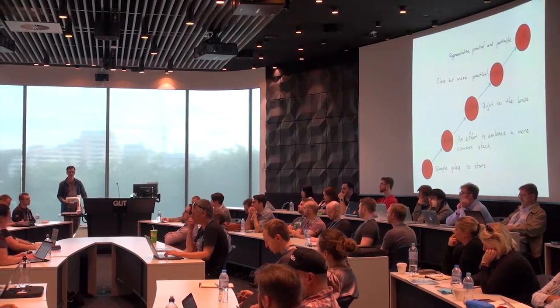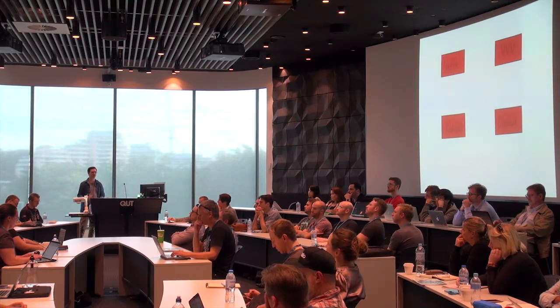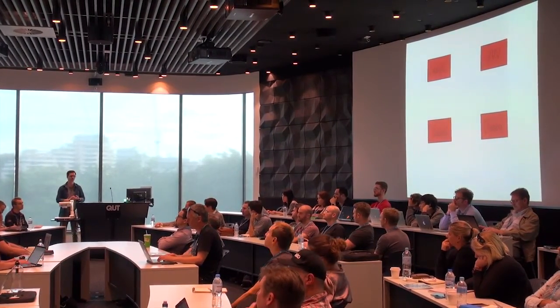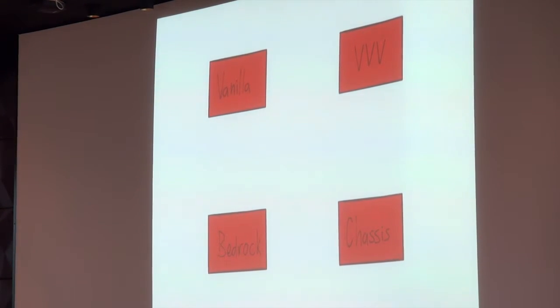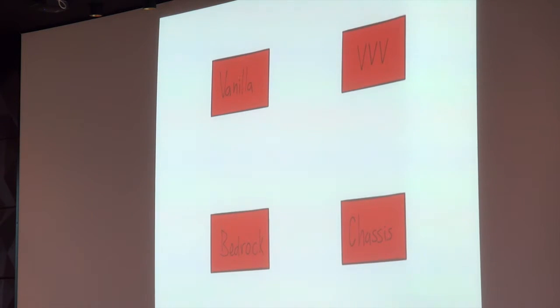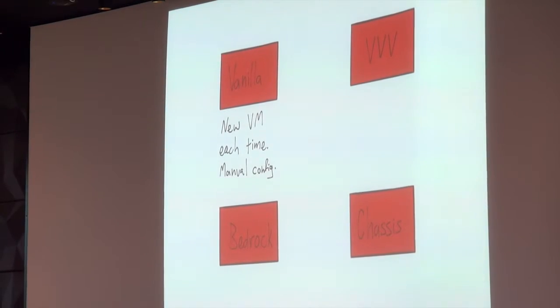Some of the options for VMs: you can go vanilla, where every project you build your own, or maybe you have one VM for all projects. But over time you get different software installed that's no longer relevant for your 30th project. If you do it per project, you end up with five different VMs with slightly different systems, and the beauty of having your development and production environments match is gone.